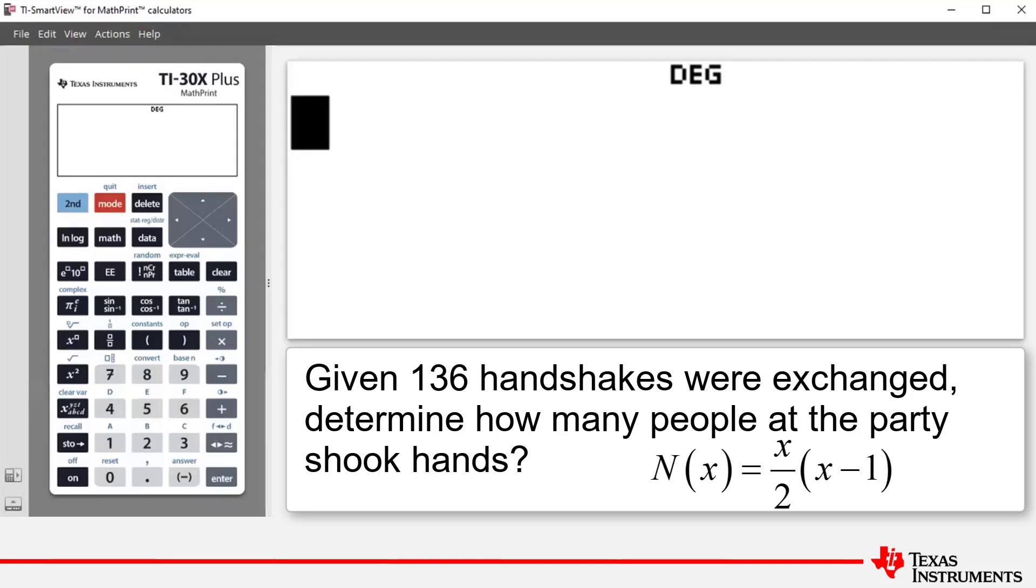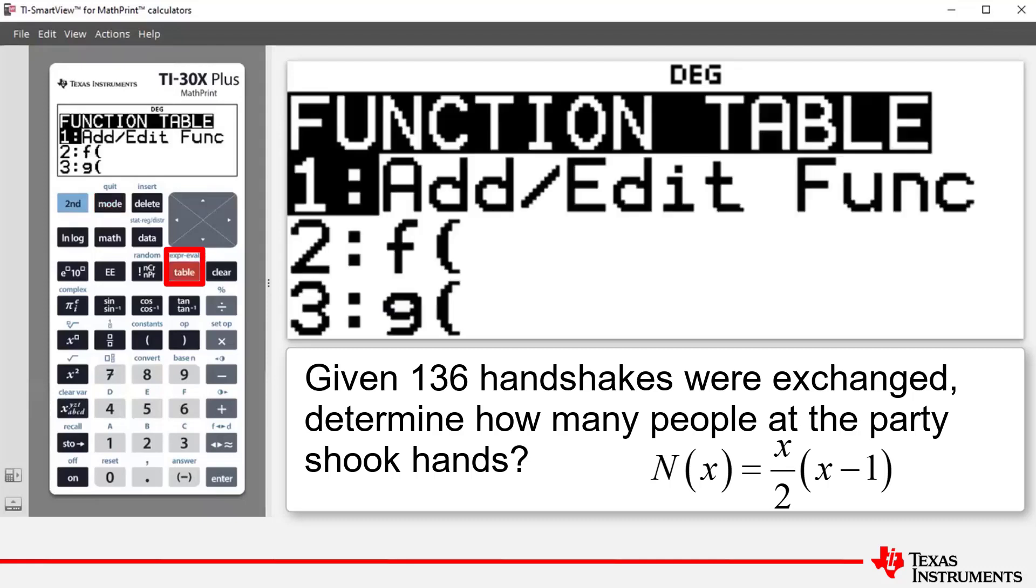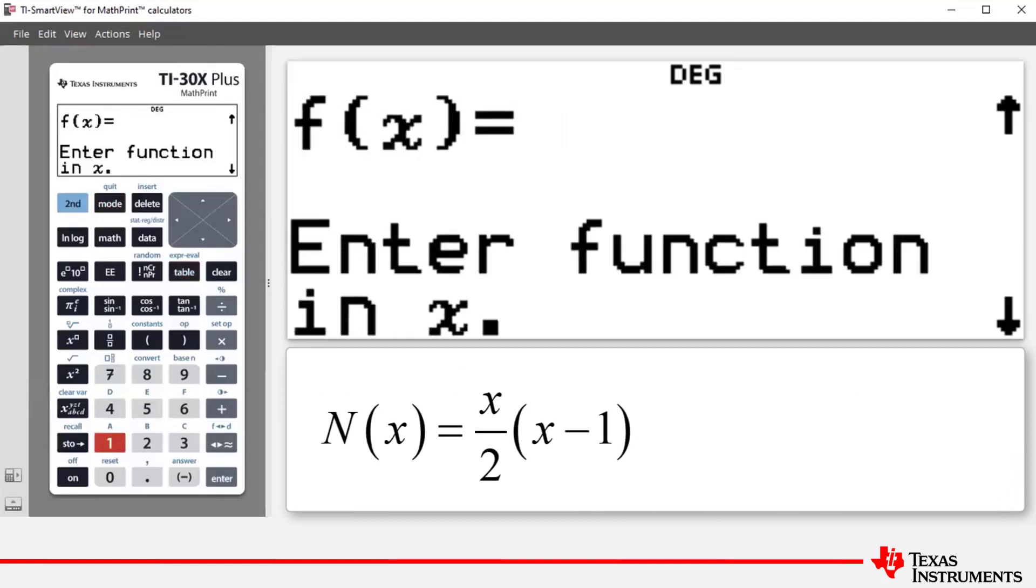Let's press the table button to access our function table feature, and we press 1 or enter to add our function. Now if there's an existing function in there for f(x), all you need to do is press clear to clear it.